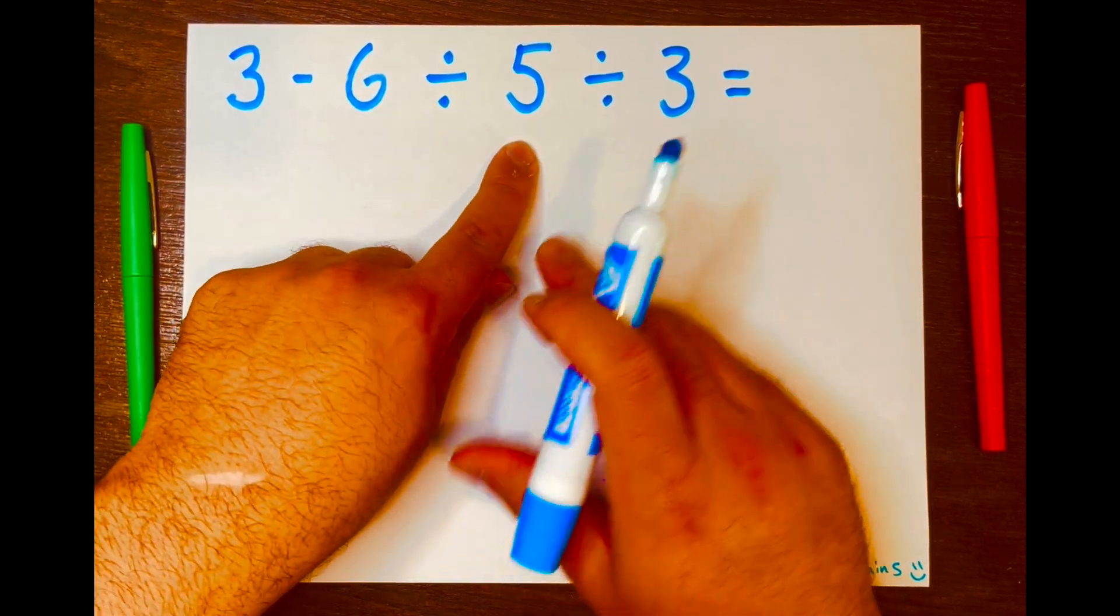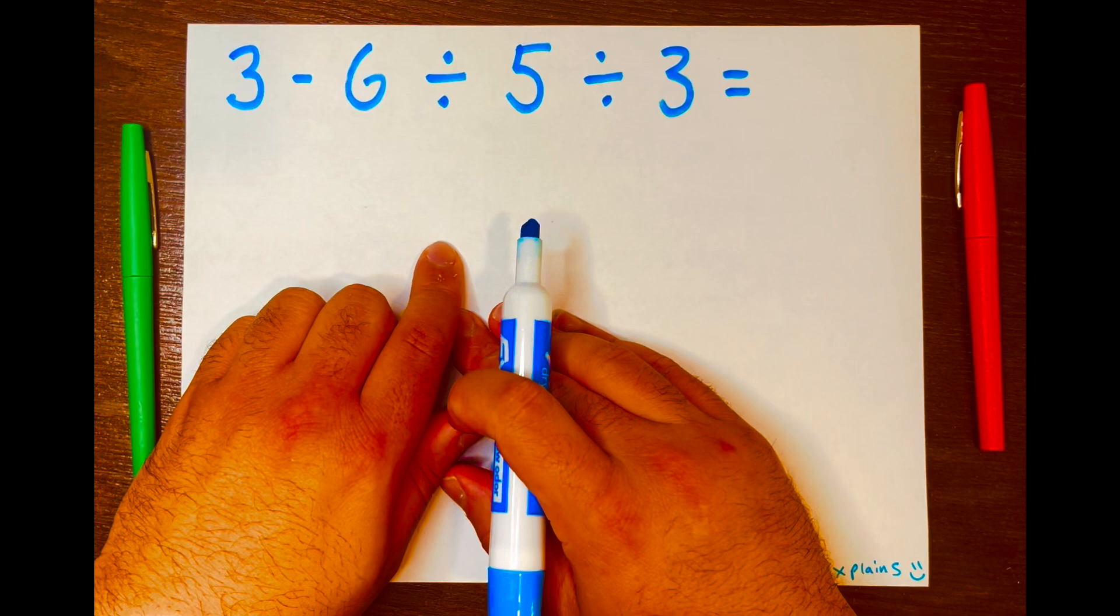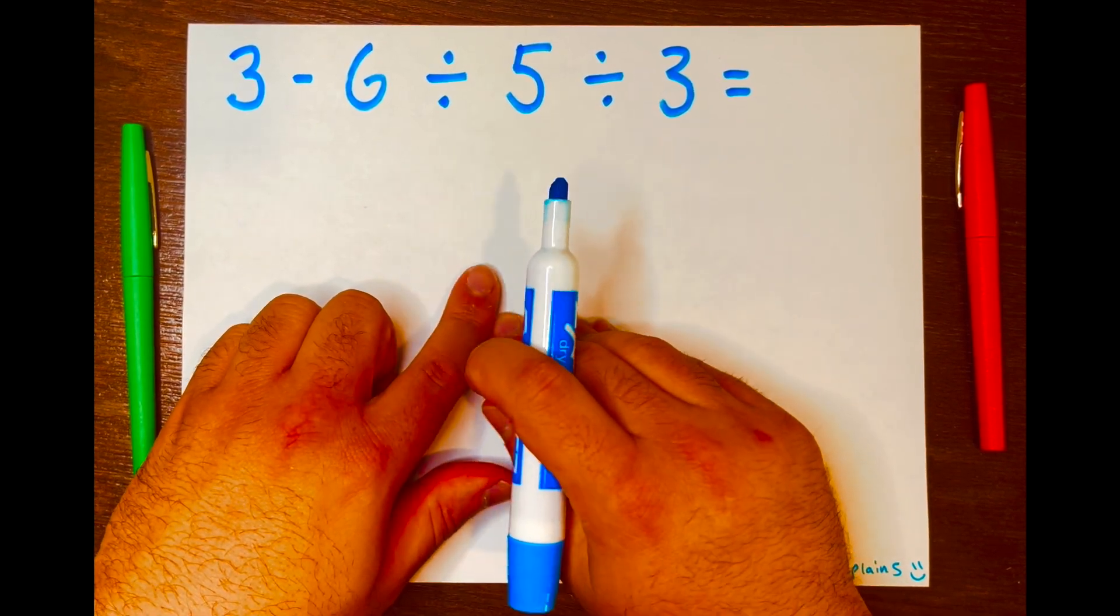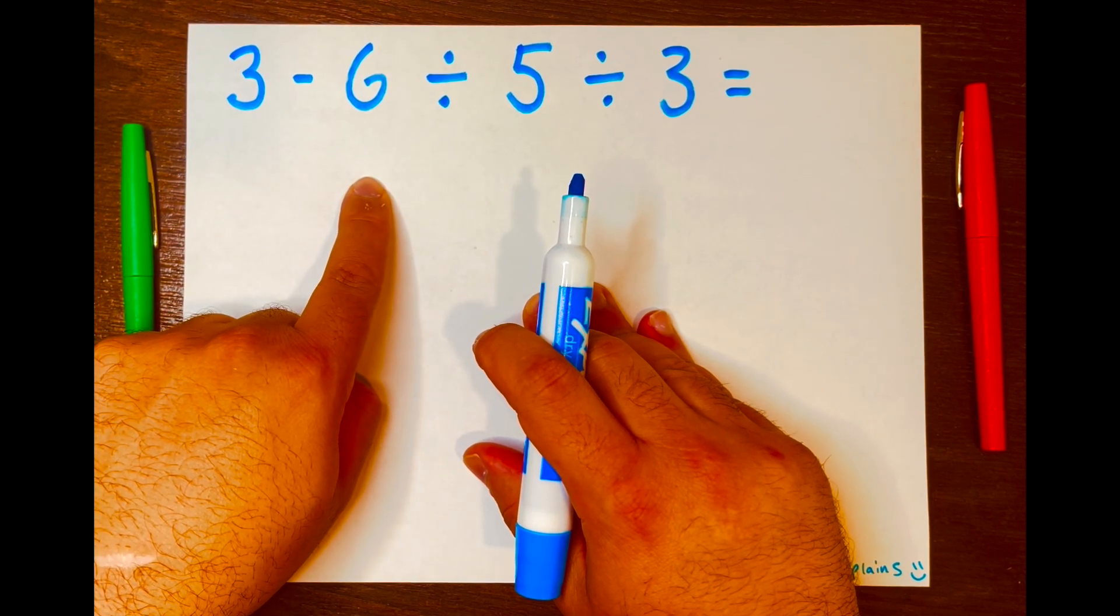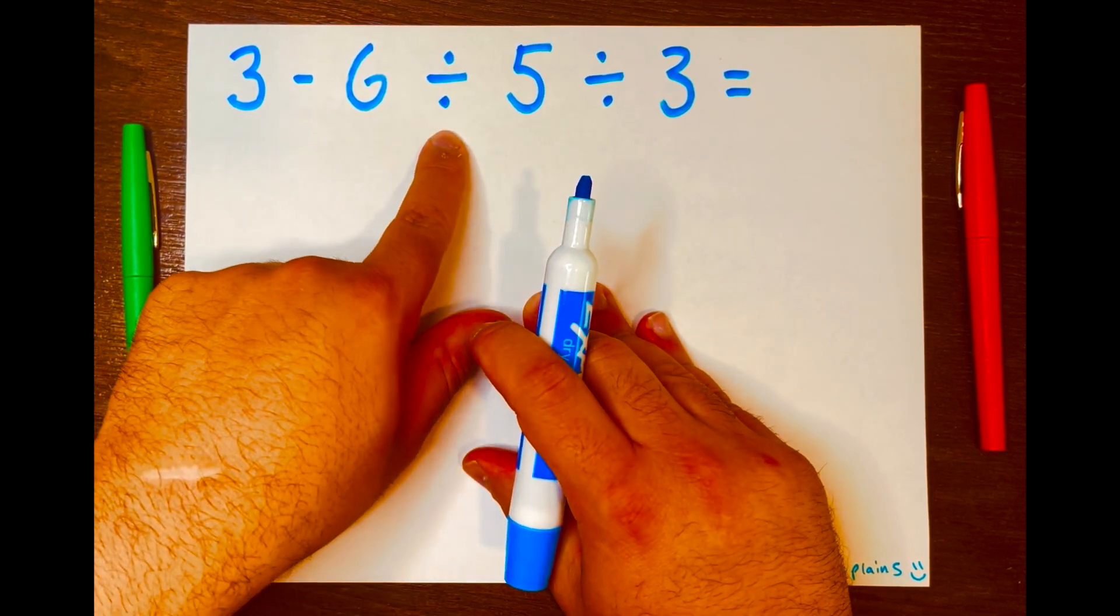3 minus 6 divided by 5 divided by 3. The first thing I'm thinking of is PEMDAS working from left to right according to its levels. So 3 minus 6 will not go first because subtraction is a lower level than division.